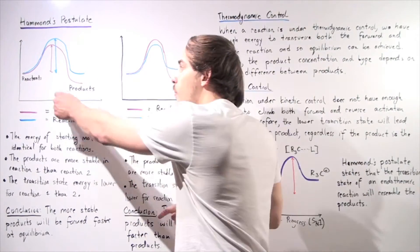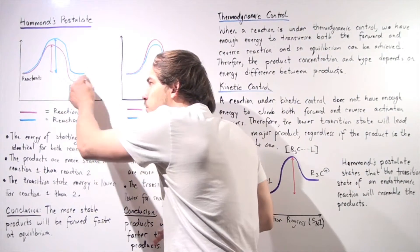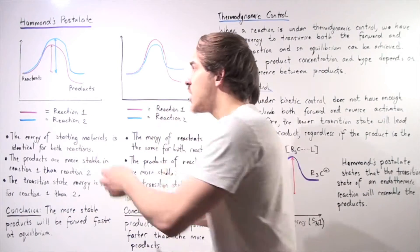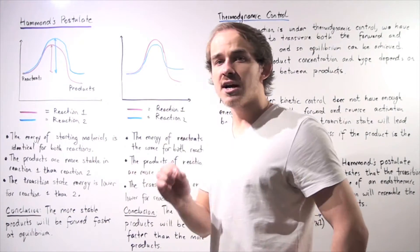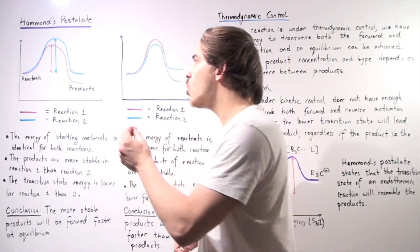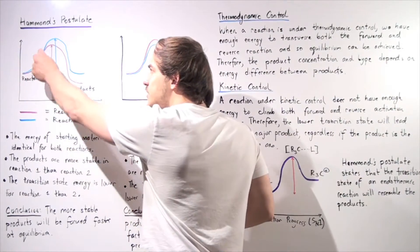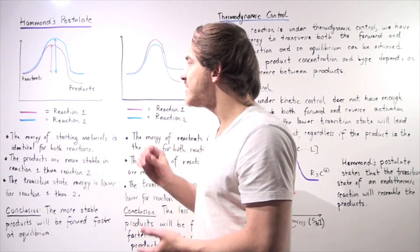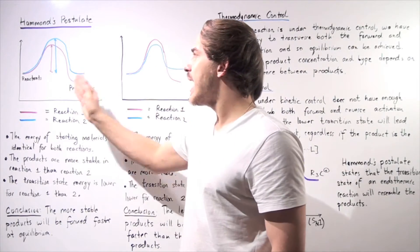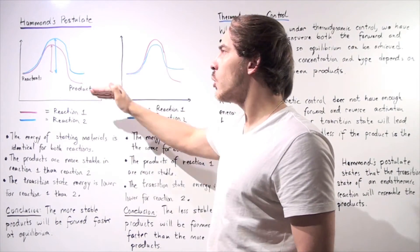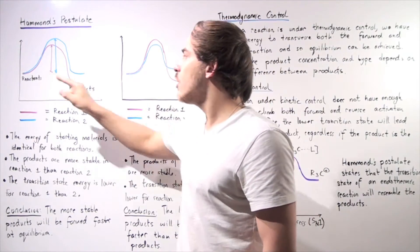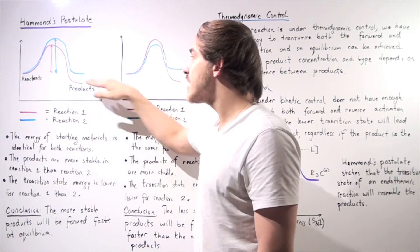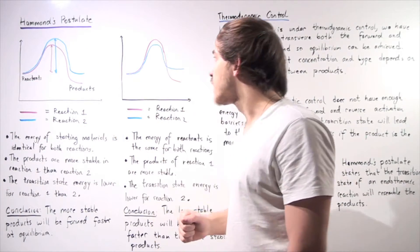The more stable products are formed faster — not because they're more stable, but because reaction one undergoes a transition state that is lower in energy. Because the activation energy for reaction one is lower than that of reaction two, reaction one takes place quicker and the products formed are more stable.